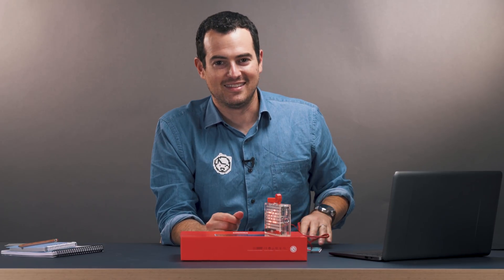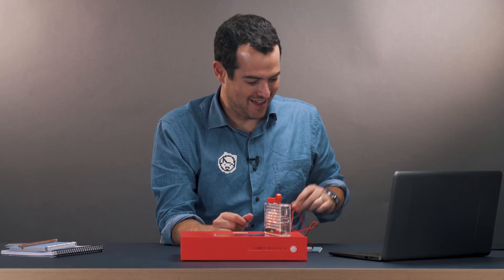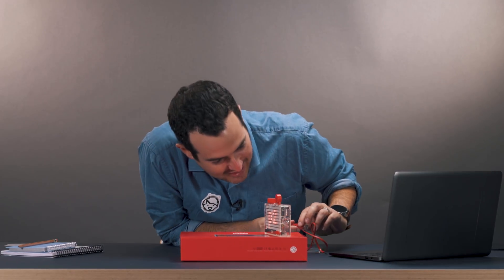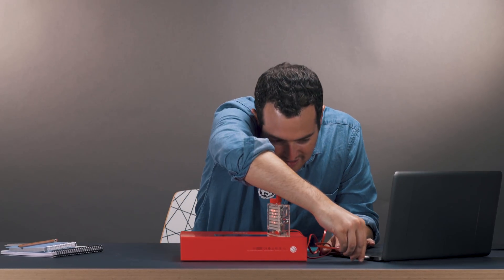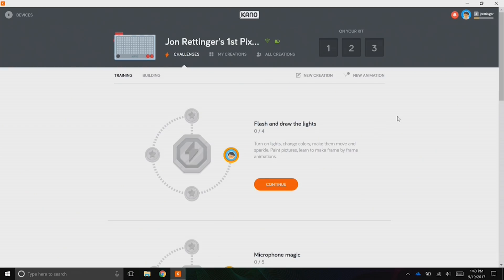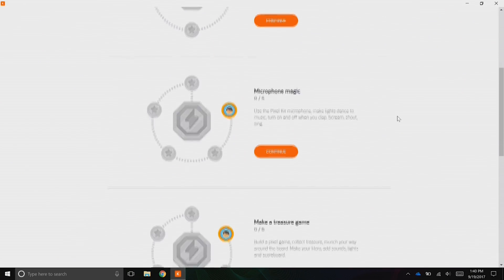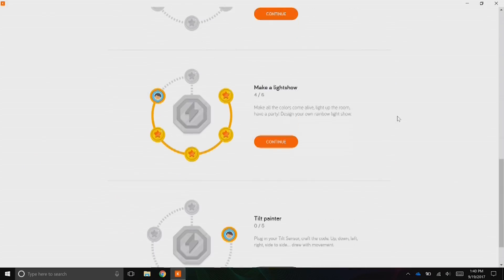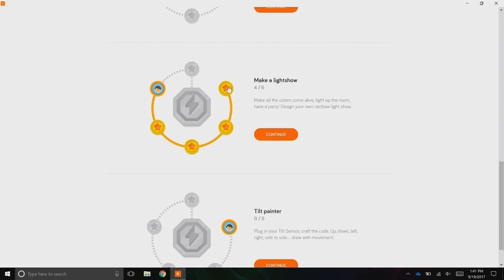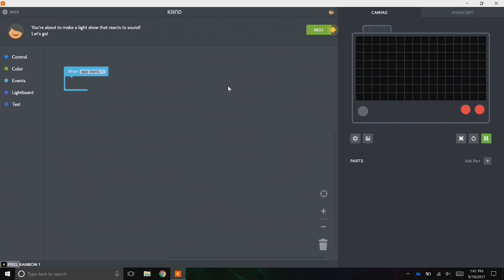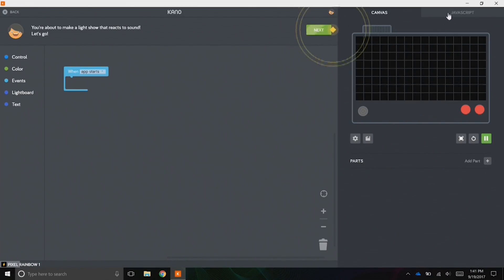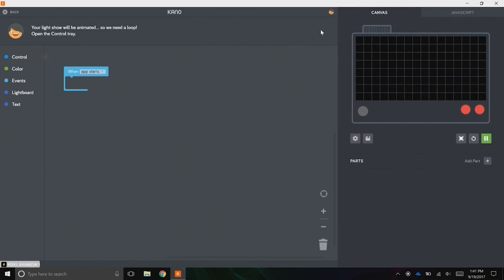All right, so now I'm in the creator and I can build a bunch of different stuff in their training apps. Let's go to make a light show. Okay, so I've got the canvas where I can go into the JavaScript if I want to do that, but I am not that good.